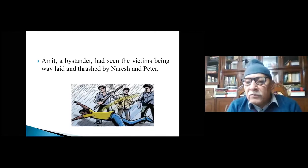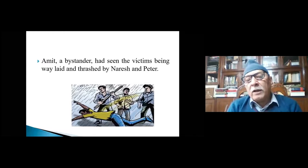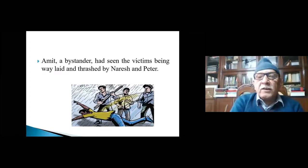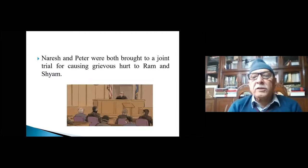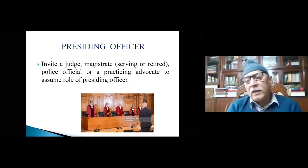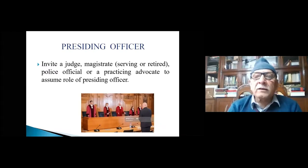When the assault was taking place, a boy named Amit happened to be present and saw the victims being attacked by Naresh and Peter. So on one hand you have the two brothers Ram and Shyam, on the other the two accused persons Naresh and Peter, and there is independent evidence in the form of Amit's testimony. Naresh and Peter were brought to a joint trial for causing grievous hurt. Keep a simple charge sheet so that it does not complicate or prolong the mock trial.